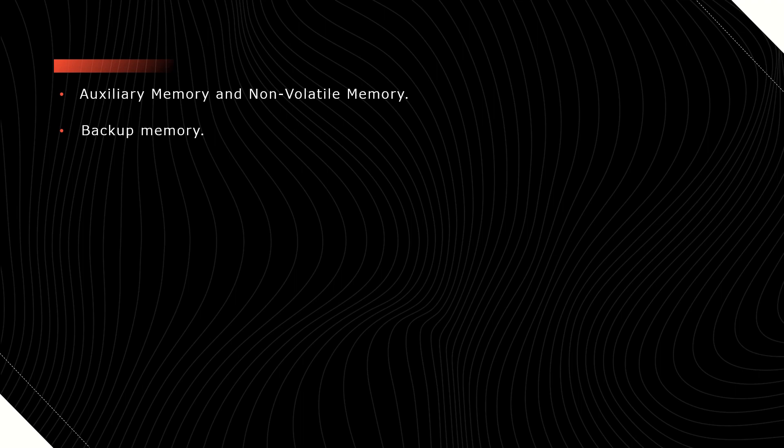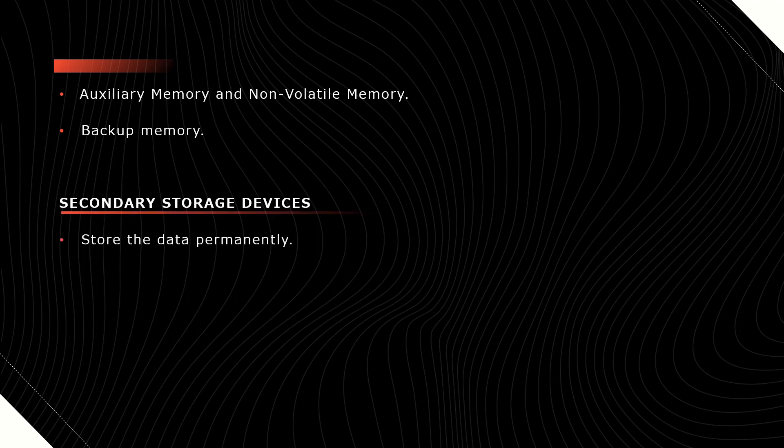We can recall the data which is stored in memory. These are slower than the primary memory, and the computer may run without secondary memory also. Secondary storage devices are used to store the data permanently.